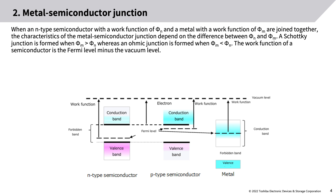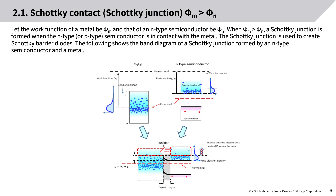When an N-type semiconductor with work function Phi_N and a metal with work function Phi_M are joined together, the characteristics of the metal-semiconductor junction depend on the difference between Phi_N and Phi_M. A Schottky junction is formed when Phi_M is greater than Phi_N, whereas an ohmic junction is formed when Phi_M is less than Phi_N. The work function of a semiconductor is the Fermi level minus the vacuum level.